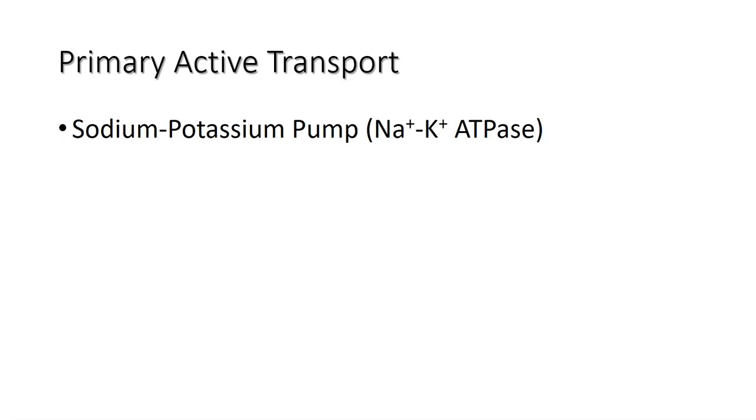One of the most important examples of primary active transport is the sodium-potassium pump, also known as sodium-potassium ATPase, which maintains the correct concentrations of sodium and potassium in living cells. Powered by ATP, the pump moves sodium and potassium ions in opposite directions, each against its concentration gradient.